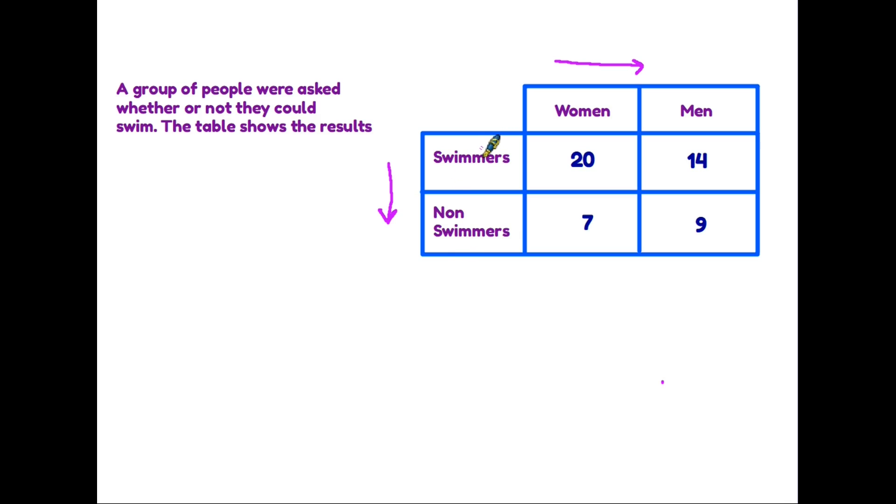So when you are asked to make a table you have to make sure you have all the categories that you need. Going across the table these are known as rows. So we have a row containing the information about swimmers and another about non-swimmers and going down the table these are the columns. So in this case we have one column with information about women and one column about men.